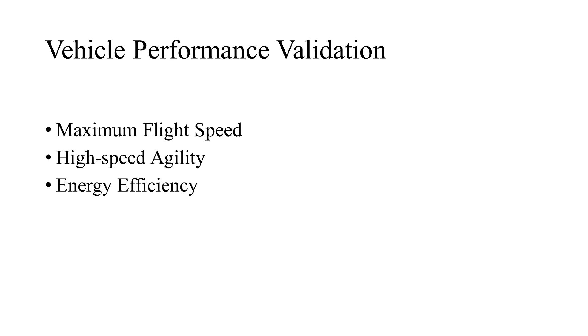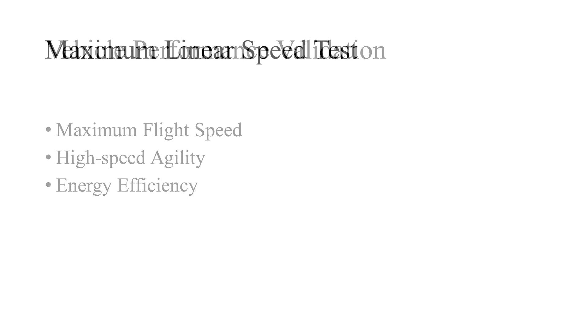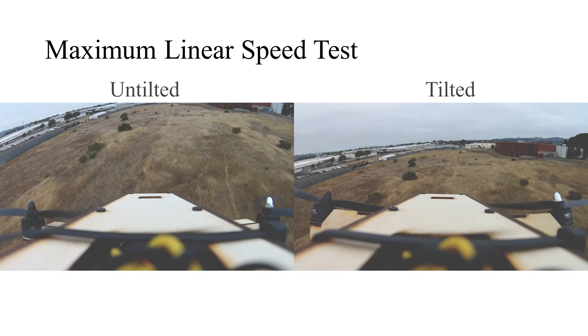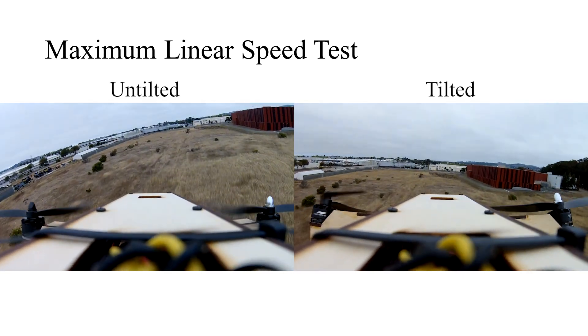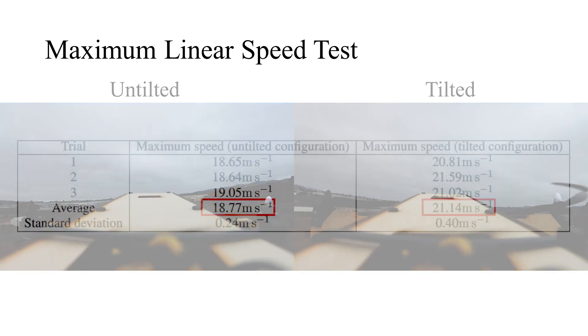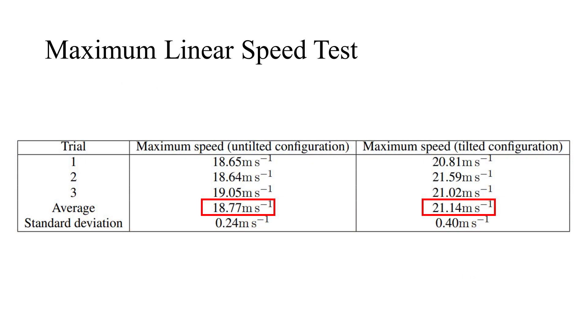We validated how tilting can improve vehicle performance from three aspects. We first measured the maximum speed the vehicle can reach under the same thrust limit. We found that tilting increases the maximum speed of the vehicle by 12.5%.